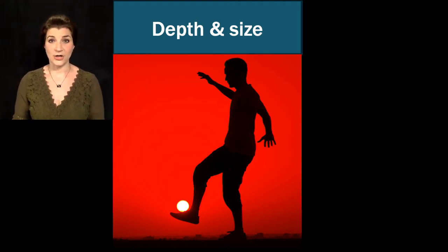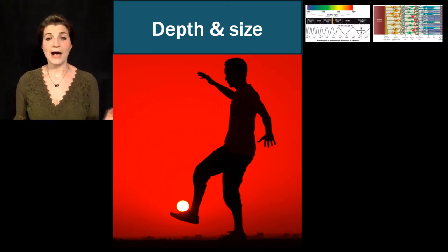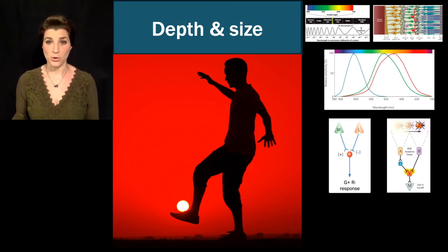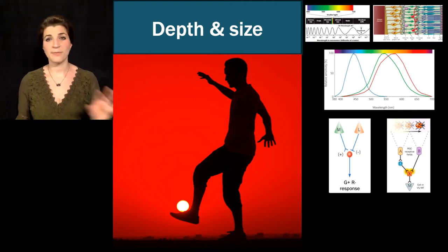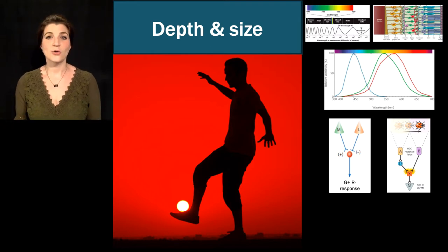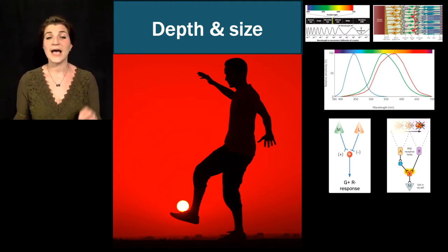We have now tackled how light is transduced, how we perceive color, how we take information from the photoreceptors and convey that up higher into the brain, and how we perceive motion. Our next topic is dealing with depth and size. We've been bottom-up heavy through opponent process theory and motion-selective circuits, and today we're going to start getting more into the top-down stuff—how we go beyond the information given and use top-down influences to guide our perceptions.